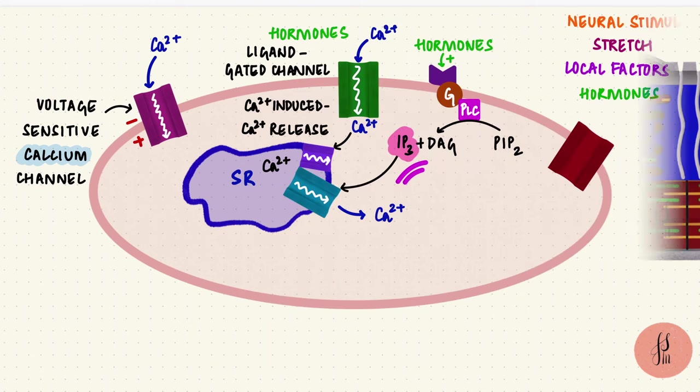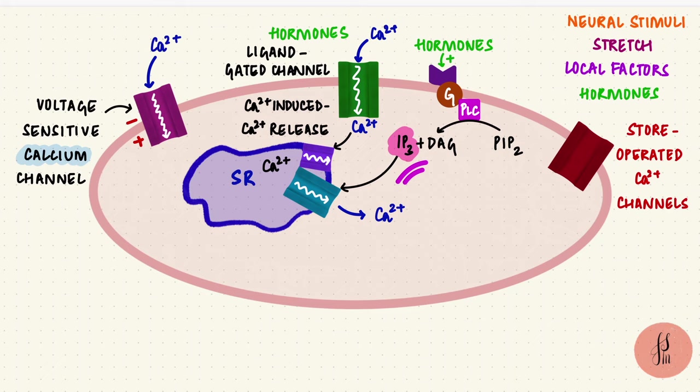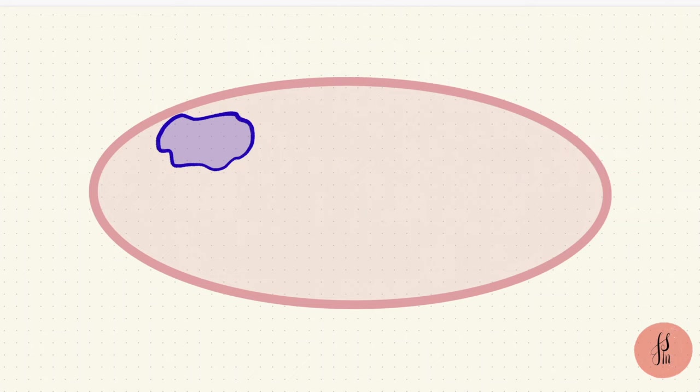Another method by which calcium can rise is through store-operated calcium channels. When the sarcoplasmic reticulum calcium stores come down, these channels open. In addition to replenishing the stores, the calcium in the sarcoplasm also rises. So through any one of these methods, voltage dependent or independent, the calcium in the sarcoplasm rises.